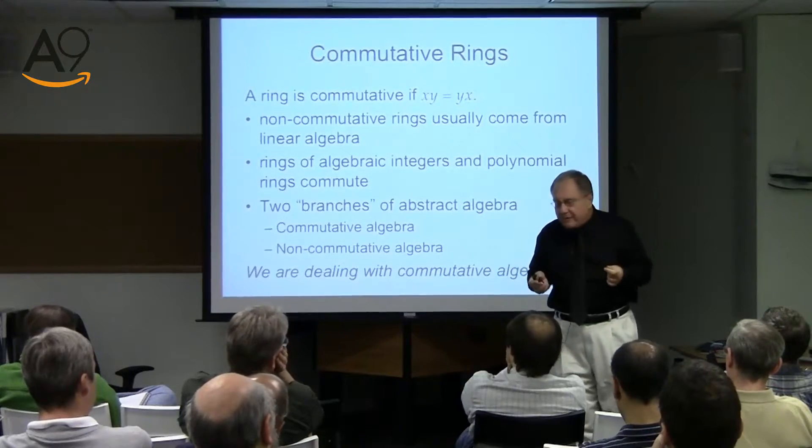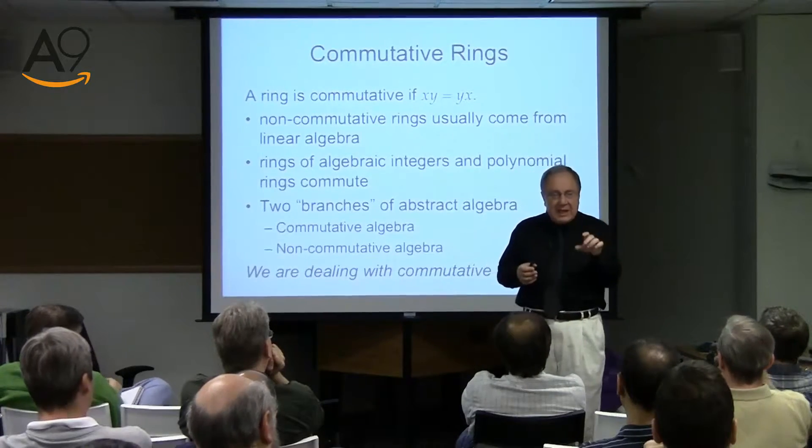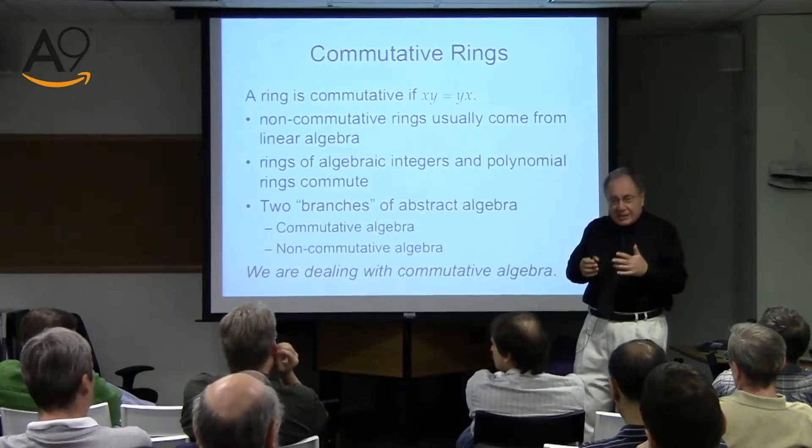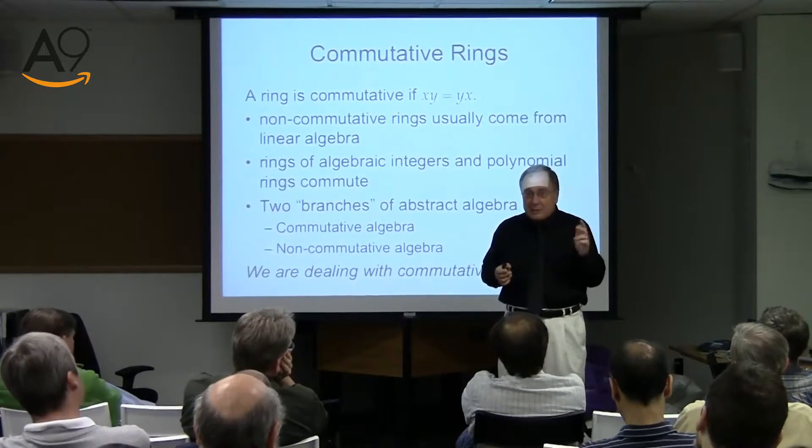Eventually they merged: Noether came up with a unified ring theory explaining how commutative and non-commutative rings relate. Even today there are two distinct flavors of abstract algebra. If you buy a textbook titled 'Commutative Algebra,' it means rings — commutative rings — mostly used for algebraic number theory. Non-commutative algebra features rings mostly coming from matrices, since matrix multiplication does not commute.